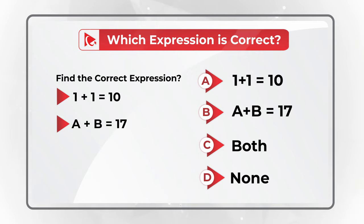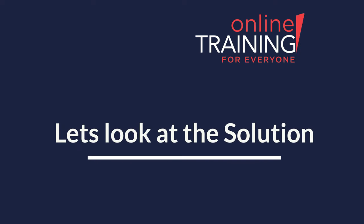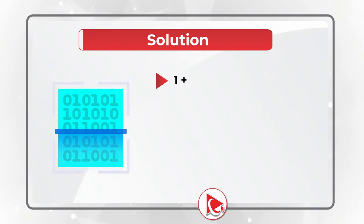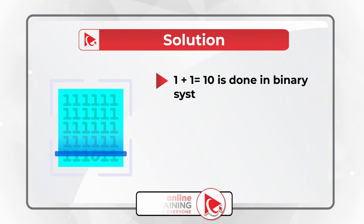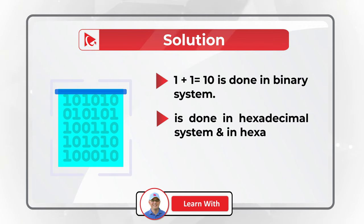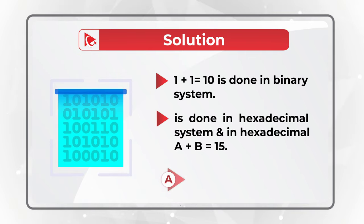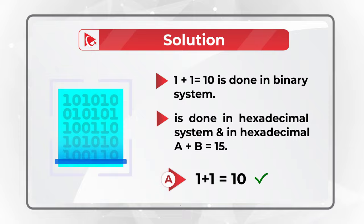I'm going to give you a quick hint: if you have a degree in computer science, it might be easier for you to get to the correct solution. The trick here is that the first expression is done in a binary system, and in binary system, 1 plus 1 equals 10. The second expression is done in a hexadecimal system, and in hexadecimal system, A plus B equals 15. So the correct answer here is Choice A: 1 plus 1 equals 10.